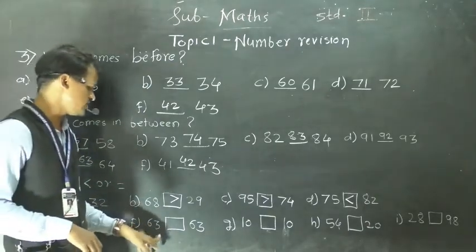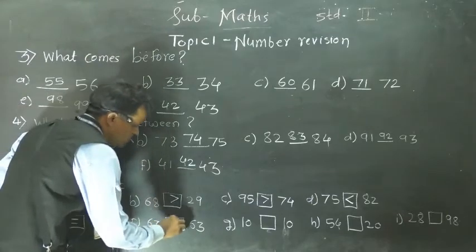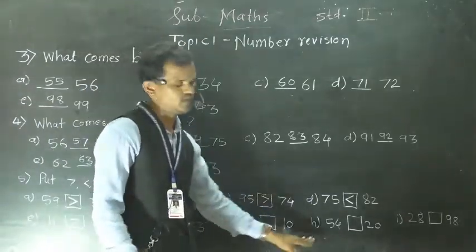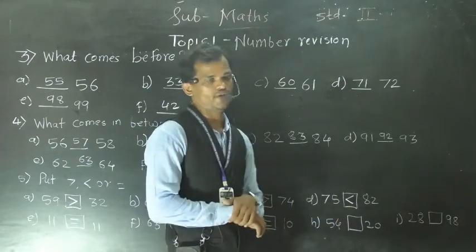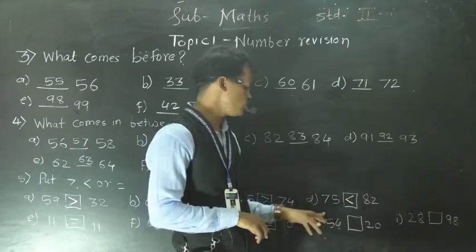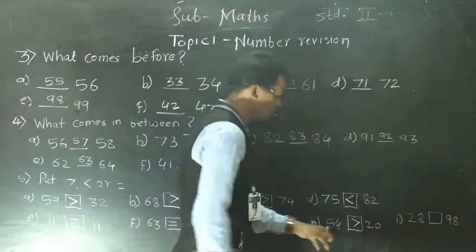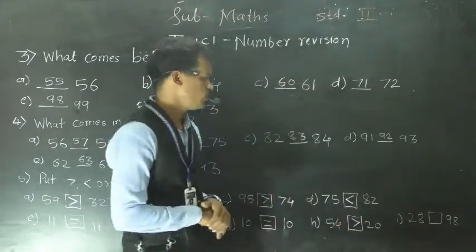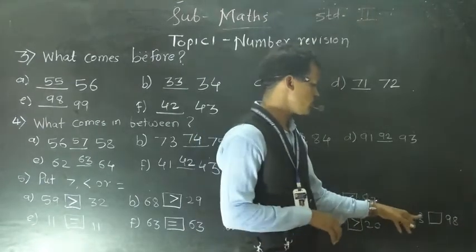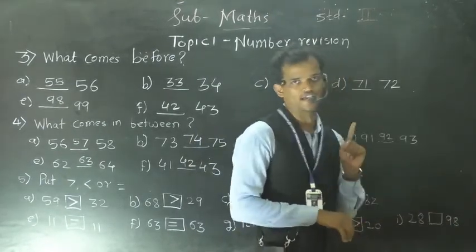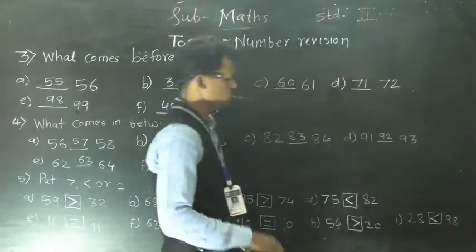Next: here also same — 63 and 63. So this sign we will use: equal to. Next: here also same — 10 and 10 — we will use the equal to sign. Next: here 54 and here 20. These are both two-digit numbers, so compare the tens place digit: here 5, here 2. So 54 is greater than 20. Next: 28 and 98. Compare the tens place digit: 2 and 9 — 9 is greater than 2, so 98 is greater than 28. Use this sign.